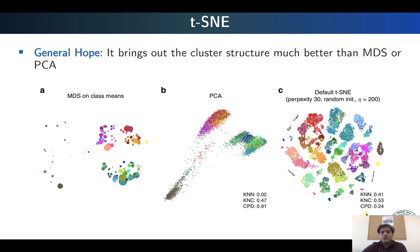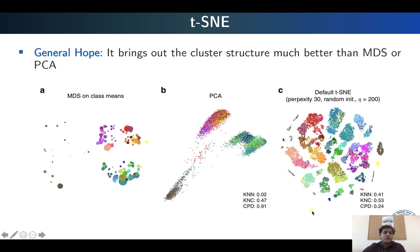In a subsequent study with single cell RNA sequencing data, people showed that with careful parameter tuning these global geometry metrics can also be improved for T-SNE. The earlier result reflects default T-SNE with default parameter values, but with some parameter tuning T-SNE can also achieve better scores for the two metrics that assess preservation of global structure.